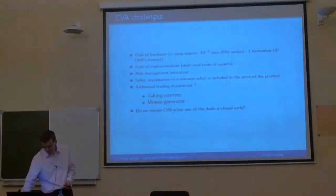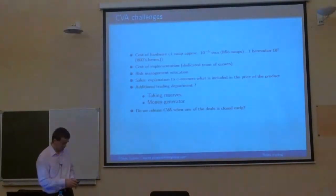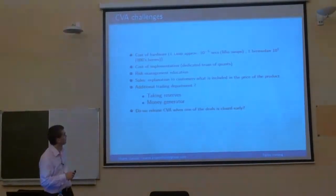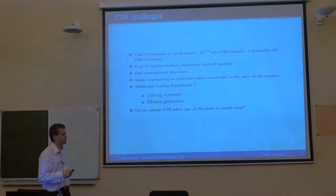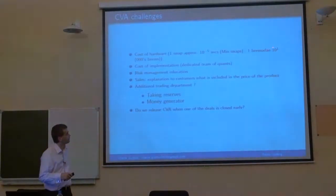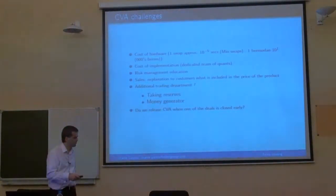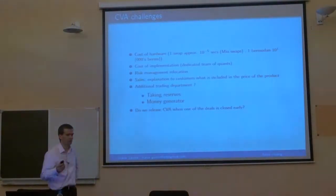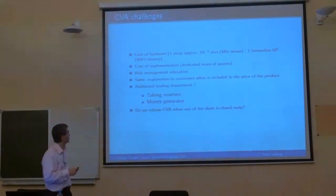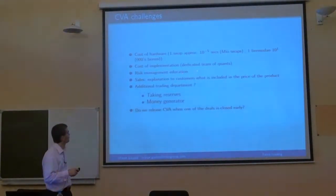The trading challenges around hardware: if a swap is calculated in 10^-5 seconds, but you have millions of swaps, that becomes several seconds. When you have complicated formulas like Bermudan options and thousands of them, this becomes thousands of seconds. But when you have a deal with a counterparty, they want to know the price now. How do I price something if I have to wait 15 minutes for someone to calculate CVA? There is huge demand for people who understand not only software but also hardware — how to set up networks so calculations run efficiently.